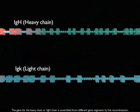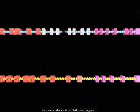The gene for the heavy chain or light chain is assembled from different gene segments by recombination. The heavy chain gene locus has numerous V gene segments and several J gene segments but also includes additional D diversity segments so that a heavy chain variable domain is encoded by a recombined VDJ gene.